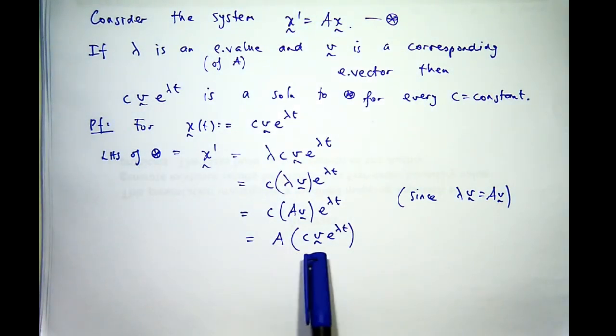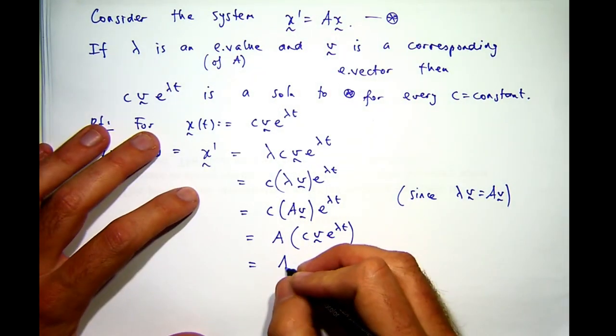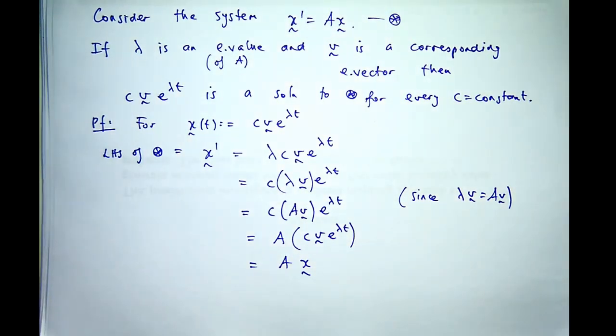And what do I have here? I have A, the matrix A, times this function here. Which was our trial function or trial solution. So we actually get the right-hand side of star.